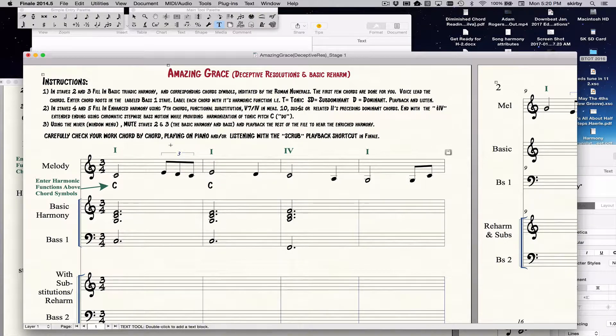Then I said label each chord with its harmonic function: T for tonic, S for subdominant and D for dominant. So then that would be stage one and at the end of stage one I'd probably have a review like feedback session where they would show me their documents so far.